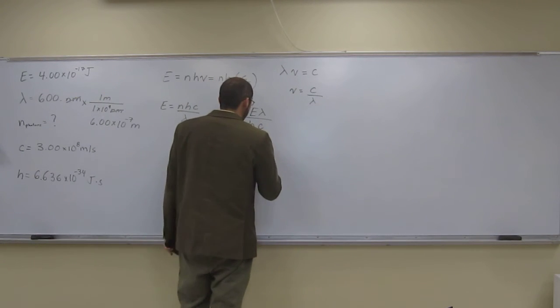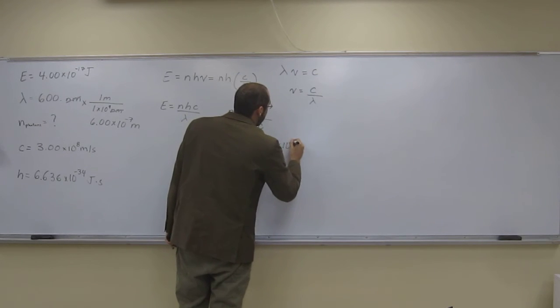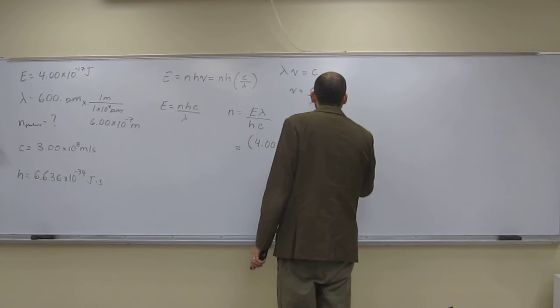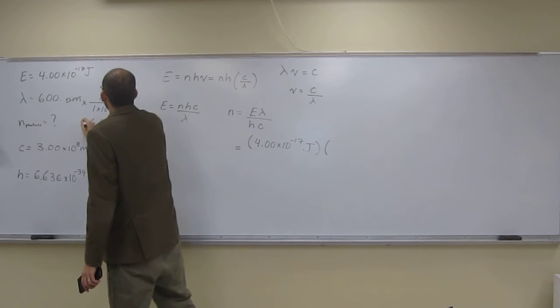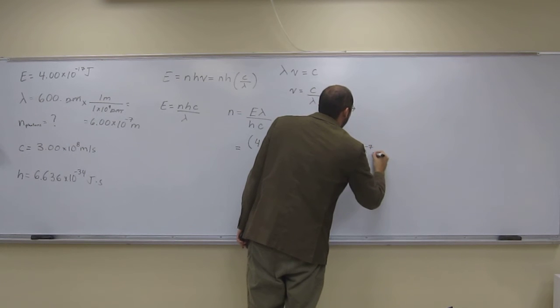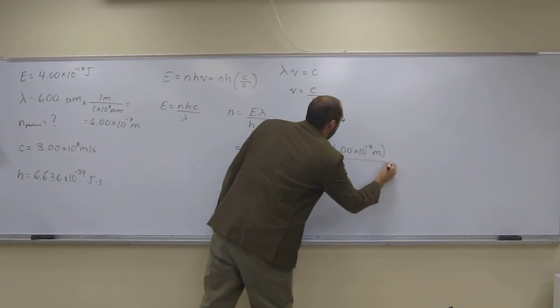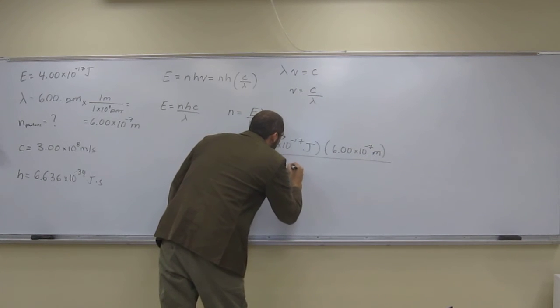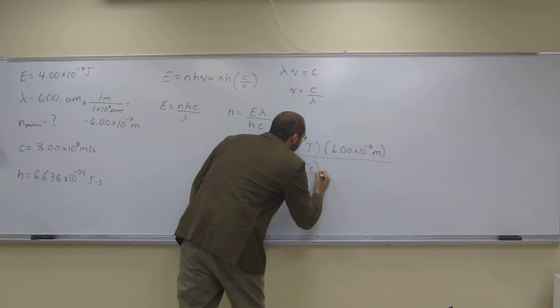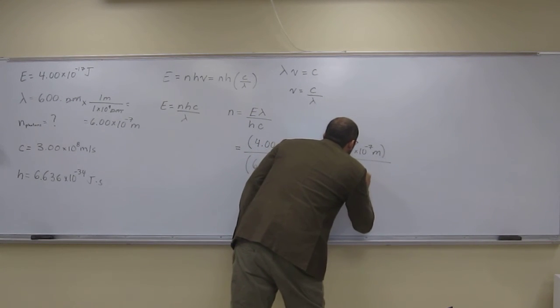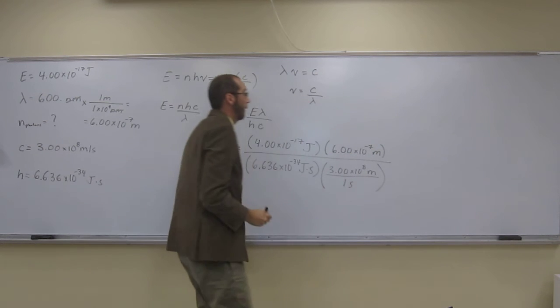So, E, where did we get that from? Well, that's given to us in the problem. 4.00 times ten to the negative 17th joules. Lambda, that's given to us. But we've converted it to meters here. So, 6.00 times ten to the negative 7th meters. All divided by Planck's constant, 6.636 times ten to the negative 34th joule seconds. Like that. And then multiply that by the speed of light constant, 3.00 times ten to the eighth meters divided by one second. Okay?